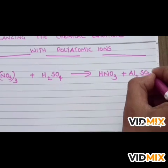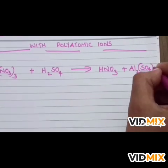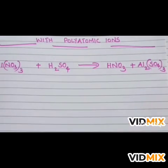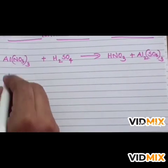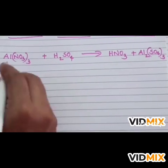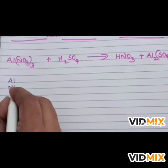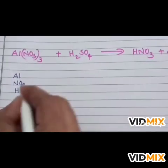First check whether the polyatomic ions are present on both sides of the equation. Here NO3 and SO4 are the polyatomic ions and they are present on either side of the equation.